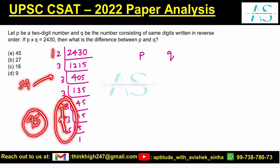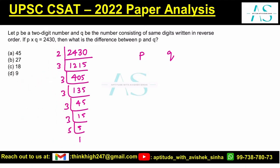Now check their product: 2 × 3 × 3 × 3 × 3 = 27 × 2 = 54. So this is a valid scenario — P = 54 and q = 45. You can verify: 54 × 45 = 2430. Correct!